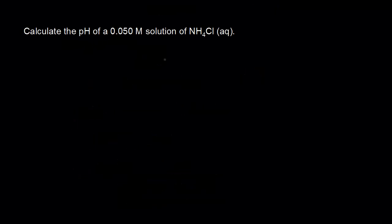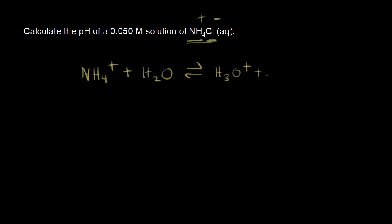Our goal now is to calculate the pH of a 0.050 molar solution of ammonium chloride. For ammonium chloride, we have NH4+ and Cl-. The chloride anions won't react appreciably with water, but the ammonium ions will. NH4+ is going to function as an acid — it donates a proton to H2O. If H2O accepts a proton, it turns into H3O+, and NH4+ losing a proton leaves us with NH3. We start with a 0.050 molar initial concentration of NH4+, and zero for our products.